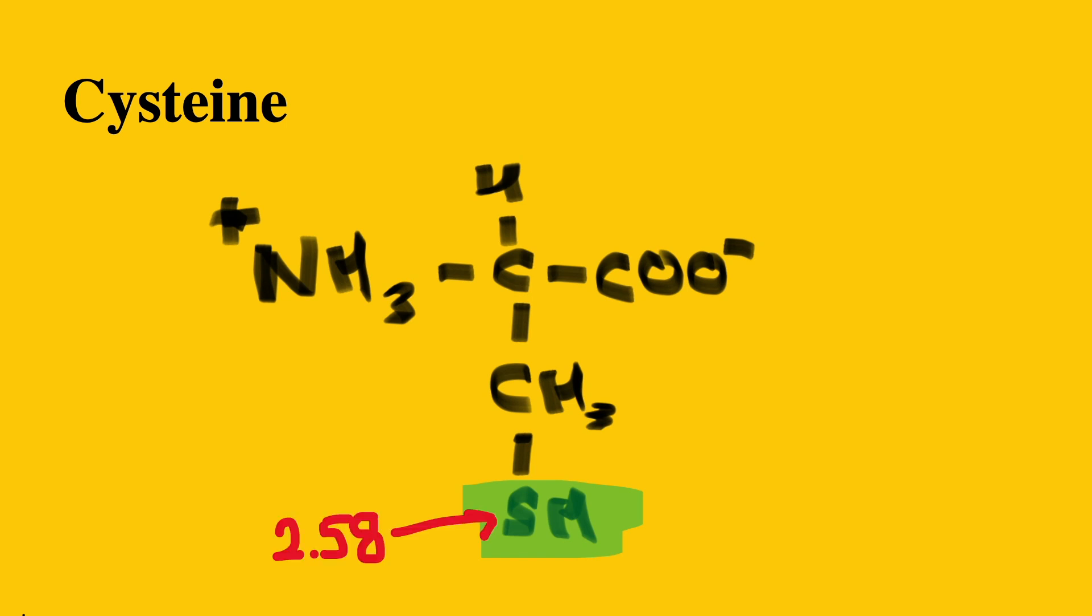The sulfur atom has an electronegativity of 2.58, while the hydrogen atom has an electronegativity of 2.20, making the electronegativity difference 0.28. This electronegativity difference is what we use to identify if a bond is polar or not.